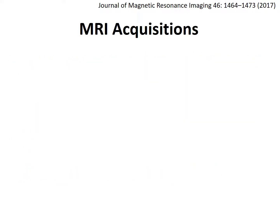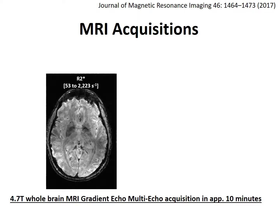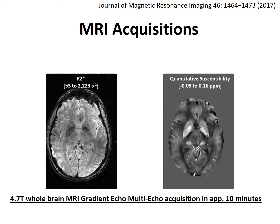In terms of MRI acquisitions, we acquired whole brain 4.7 Tesla gradient echo multi-echo acquisitions, which took approximately 10 minutes. You can see on the left a representative R2-star map from a control subject, and on the right the quantitative susceptibility map from the same subject. We are interested in the deep brain matter, which is highlighted by a yellow box in this slice.